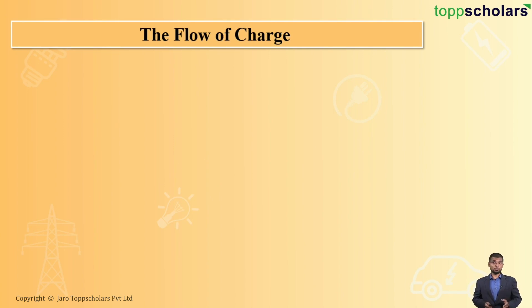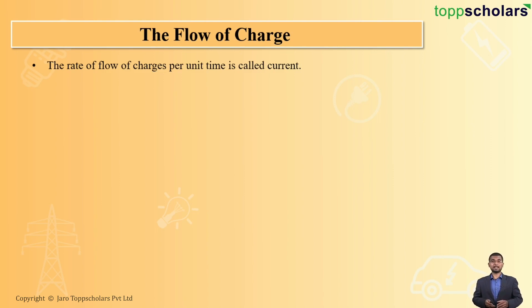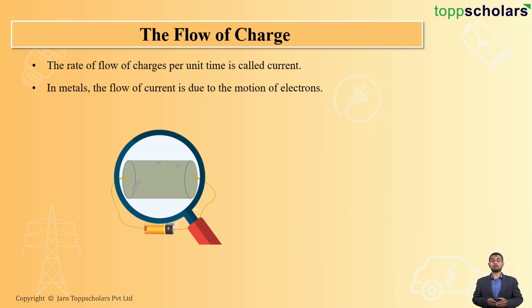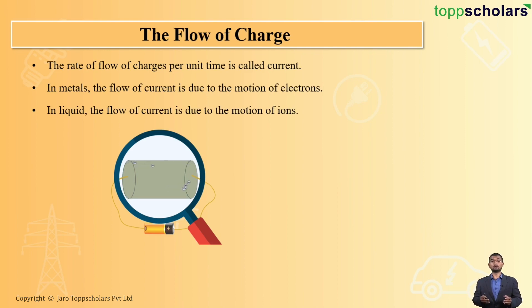We know that the rate of flow of charge per unit time is called current, which can be easily seen in this example. Suppose we connect a conductor with the help of a battery — you can easily see that the electrons are flowing from the negative terminal to the positive terminal. In metals, the flow of current is only due to the motion of electrons. But in liquids, on the other hand, the flow of current is due to the motion of ions, and this charge is either positive or negative.